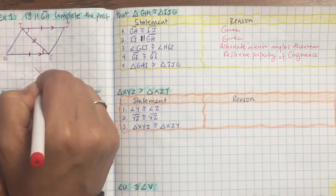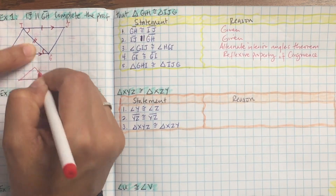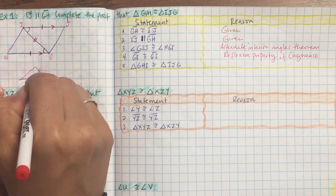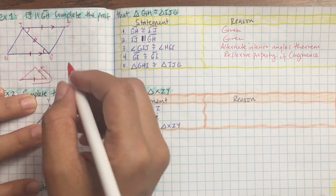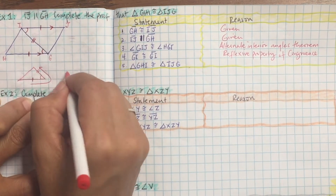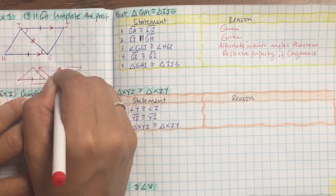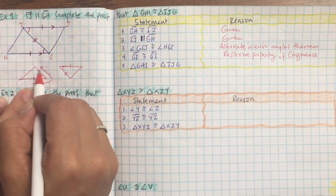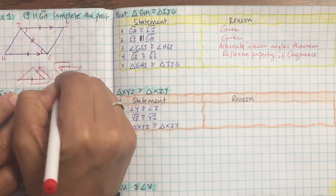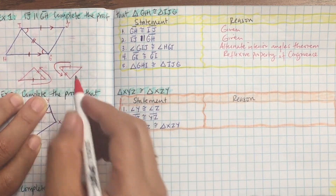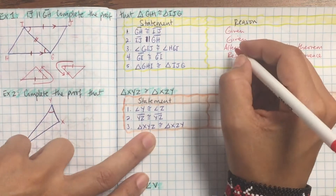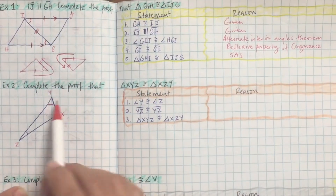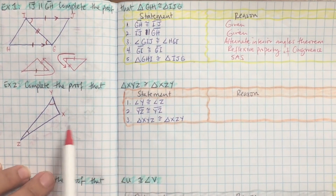Finally, why is one triangle equal to the other? Separate the two triangles and transfer the information — draw two separate triangles. Starting from the one tick, read to the arc and then to the two ticks. The pattern is: one tick, one arc, two ticks — same in both triangles. That's side-angle-side, so the two triangles are congruent by SAS.